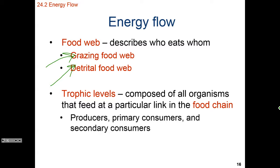Regardless of where an organism is on the food web, it's going to have a specific level. That level — either between producer and herbivore, or carnivore, or between herbivore and primary carnivore, or secondary carnivore — is going to be known as a trophic level.